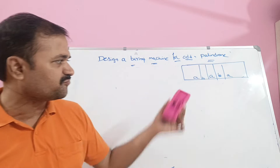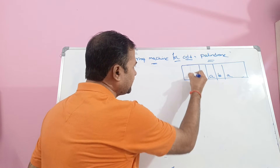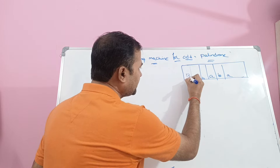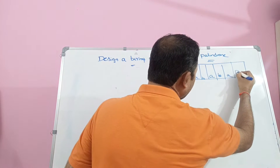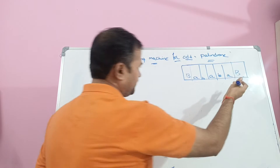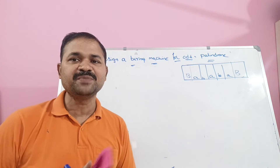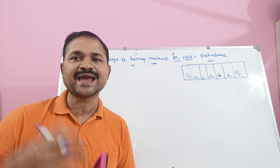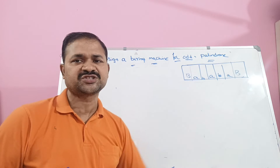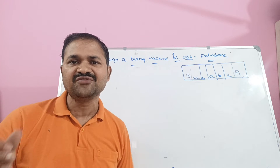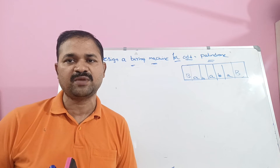The length of this string is 5 characters. Before ABABA we can have any number of blank spaces, and after ABABA we can have any number of blank symbols. Blank symbols are denoted by capital V. We are assuming that this is our string, and we can take any other string as well — there is no problem.